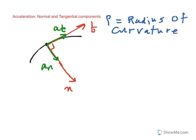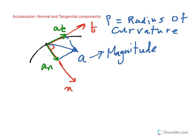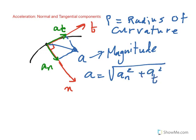The normal component of acceleration always points toward the center of curvature. The magnitude of the total acceleration is the resultant of the two components. Since the normal and tangential directions are perpendicular to one another — like x and y — the magnitude of acceleration is: a = √(a_n² + a_t²).